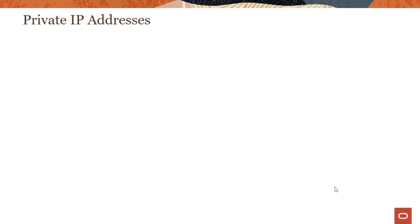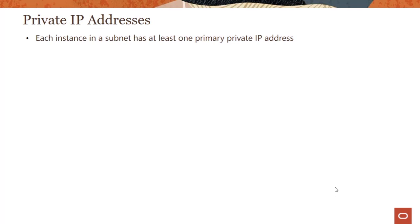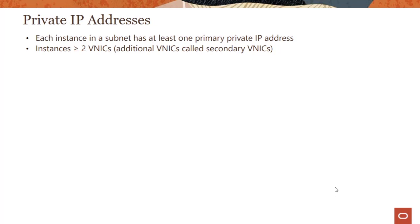Let's first look at the different kinds of IP addresses supported by the service, starting with private IP addresses. Each instance you place in a subnet has at least one primary private IP address — that's mandatory. Each instance can have two or more virtual network interface cards. The first one is called the primary VNIC, and the additional ones are called secondary VNICs.